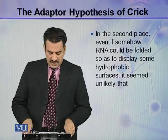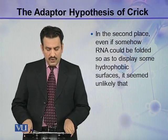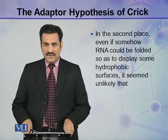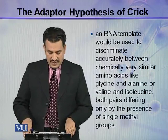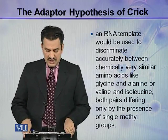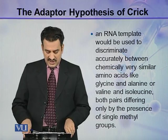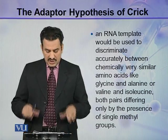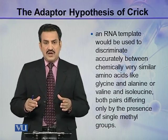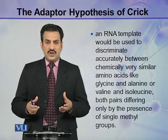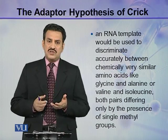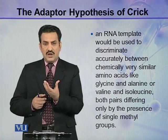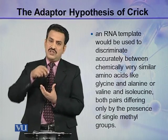In the second place, even if somehow RNA could be folded so as to display some hydrophobic surfaces, it seemed unlikely that an RNA template would accurately discriminate between chemically very similar amino acids like glycine and alanine, or valine and isoleucine. These amino acids are very similar because they differ only by the presence of one methyl group, so how could they be identified by hydrophobic patches or folds present on the RNA?